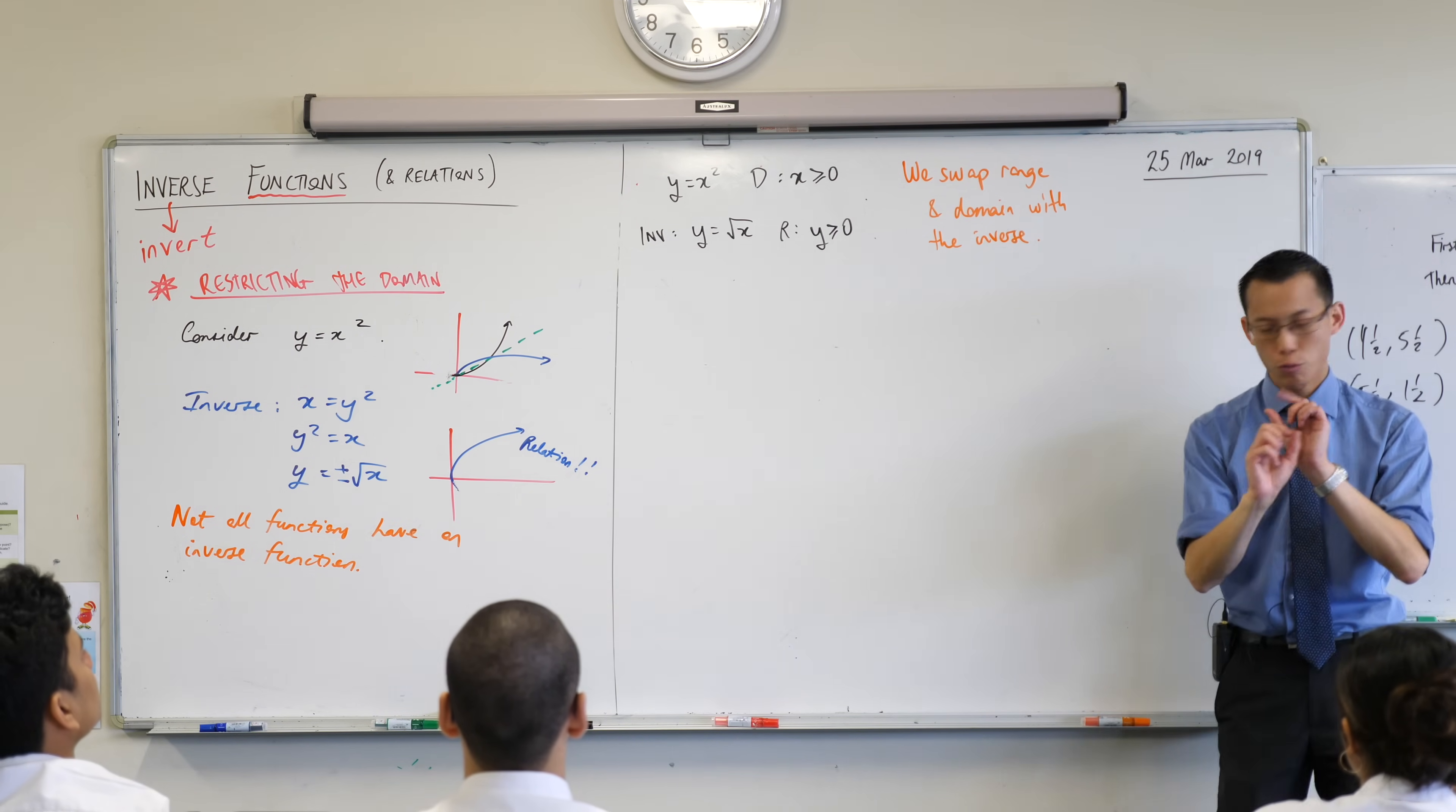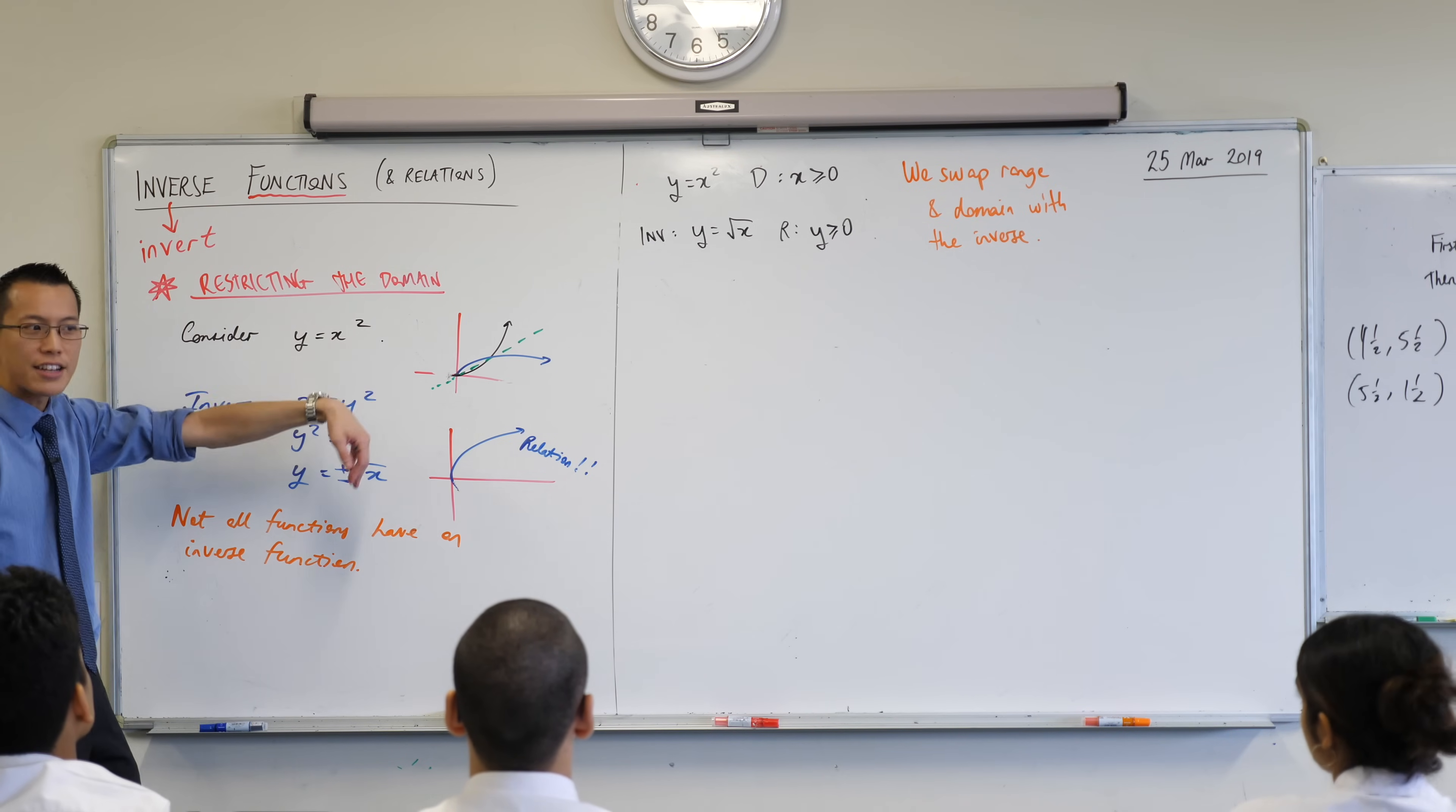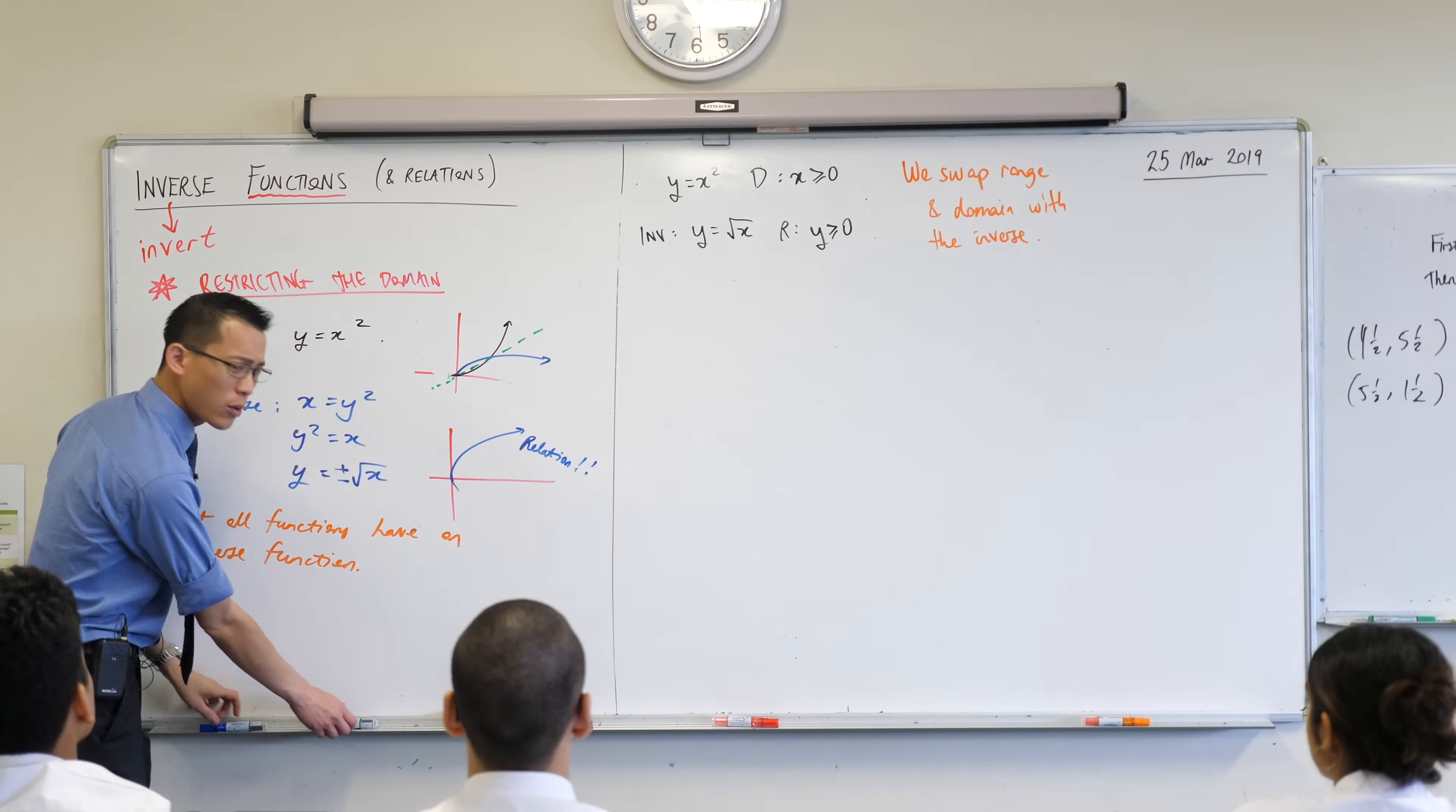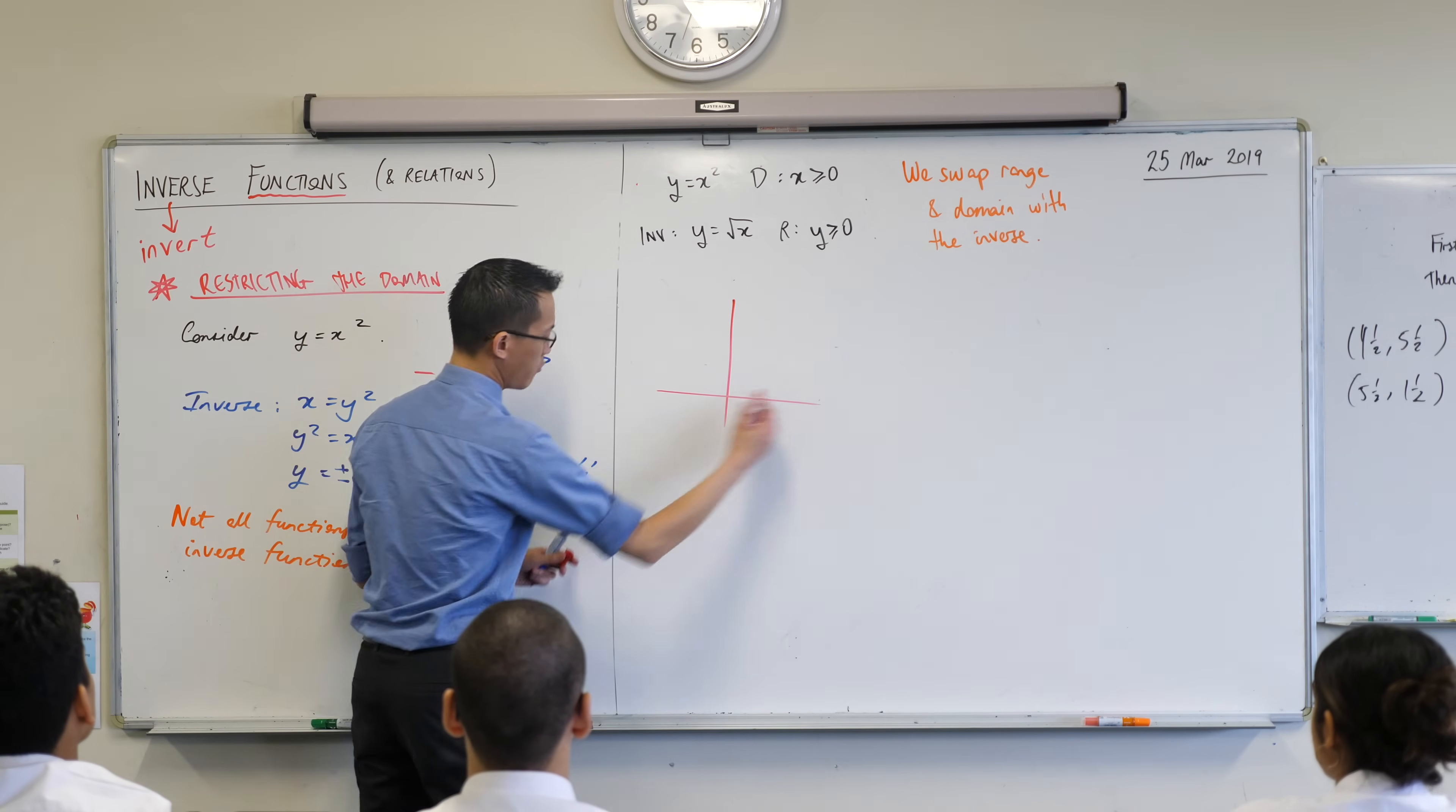Okay, now, just a really small sub-note. You notice over here, I was like, I just chose a part. We just chose this part over here. Would anyone like to suggest to me, why didn't we... You don't have to draw this, by the way. Why didn't we pick the other part?